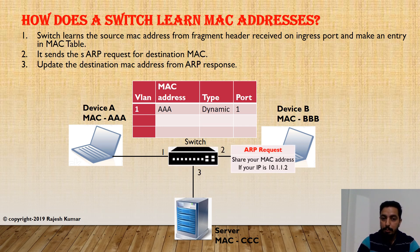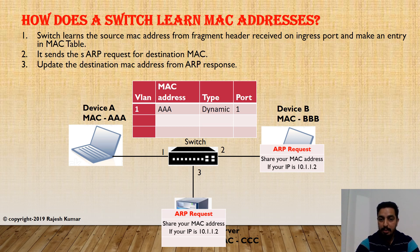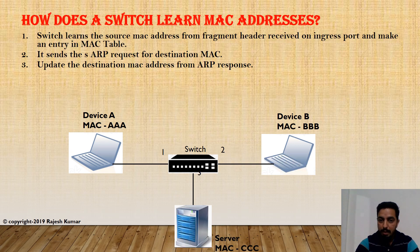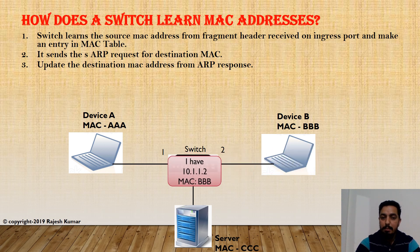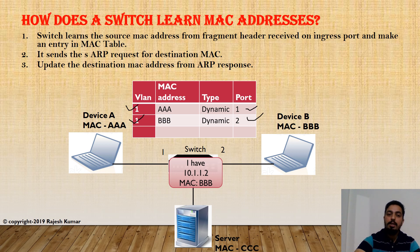In the ARP request, the switch asks: 'Whoever is holding IP address 10.1.1.2, please reply with your MAC address.' This request is sent to all ports — port 2, port 3, and as many ports as you have. All devices receiving the request check the IP address against their own. In our case, device B matches, so it replies back with its MAC address. The switch updates that information into the MAC table. Now there are two MAC address entries, both learned dynamically.